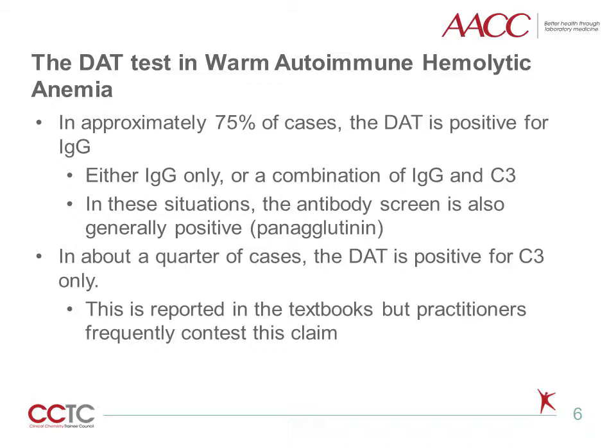In these cases, it is important to exclude the possibility of an alloantibody in addition to the autoantibody. This can be approached by obtaining a detailed history. A man with no history of transfusion is much less likely to have an alloantibody than a woman with a history of pregnancy and previous red blood cell transfusion, along with adsorption studies when applicable. Because these warm-reacting autoantibodies can frustrate serologic investigations, some transfusion services obtain a phenotype using molecular methodology and then provide phenotype-matched blood to patients when an underlying alloantibody cannot be excluded.